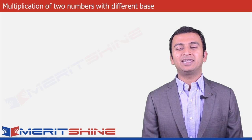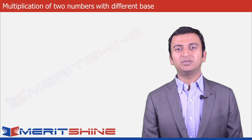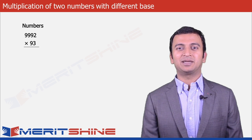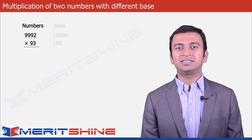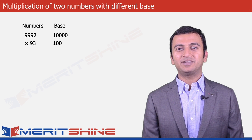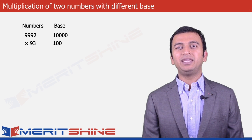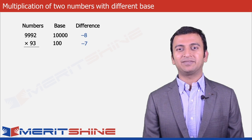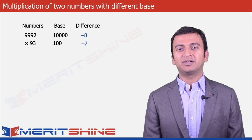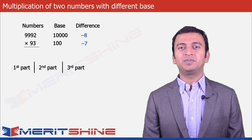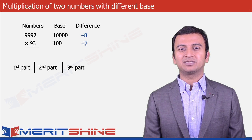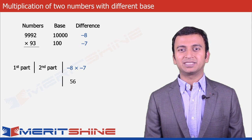Let us now take 9992 into 93 as an example. Here our bases would be 10000 and 100 respectively, and our differences would be minus 8 and minus 7. Let us proceed to write down our answer in three parts. The third part would be the product of the differences — minus 8 into minus 7 — giving us plus 56.